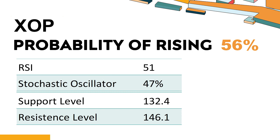What are the key technical drivers for XOP? The 14-Day Relative Strength Index (RSI) value of XOP was 51. When the RSI is within the range of 50 to 70, it generally indicates that the stock is moderately bullish. This means that the security's price has been on the rise but has not yet reached overbought levels, which are typically considered an RSI reading of 75 or higher.